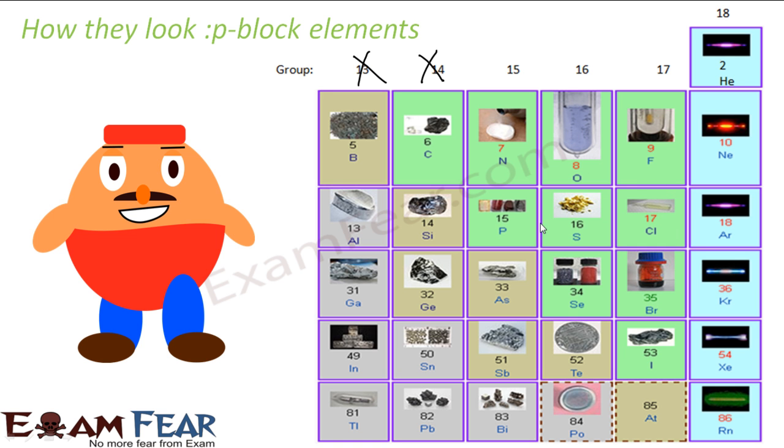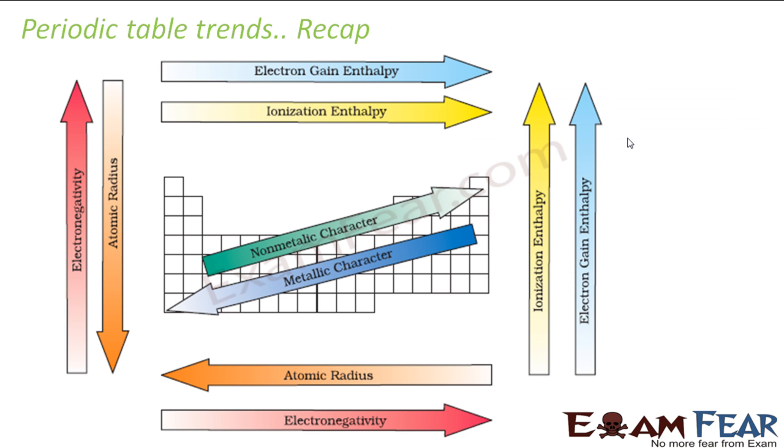So we will discuss about all these elements now. We will start with group 15. But before that we will discuss again some of the common trends in the P block elements. We discussed that in class 11. We will just do a quick repeat. So if you see this is what we have discussed. If you go from left to right in the periodic table the electron gain enthalpy increases. Electron gain enthalpy is nothing but the amount of energy when an isolated gaseous atom accepts an electron to become a monovalent gaseous ion.